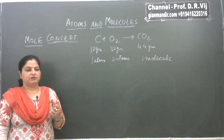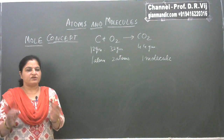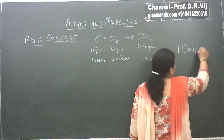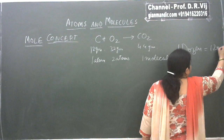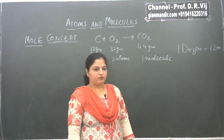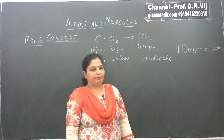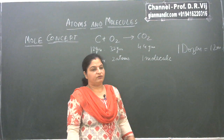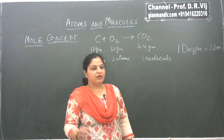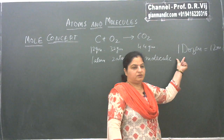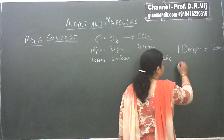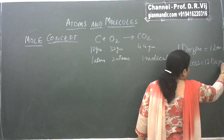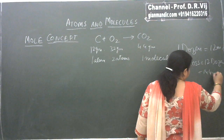For expressing the huge number of particles in a convenient way, we need to have some short term which may express a fixed number of particles. For example, in daily life we use the term 1 dozen, and you all know that 1 dozen means 12 in number. 1 dozen of apples means 12 apples, 1 dozen of pens means 12 pens, 1 dozen of chairs means 12 chairs. We can have even bigger quantities — another term known as gross. 1 gross is equal to 12 dozen, which is 144 in number.